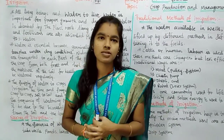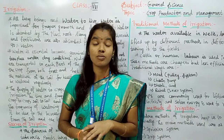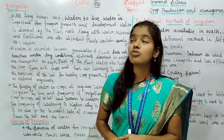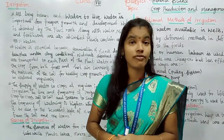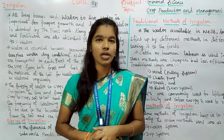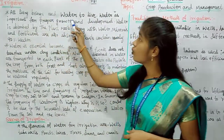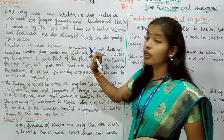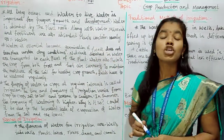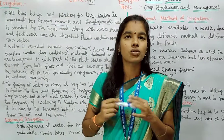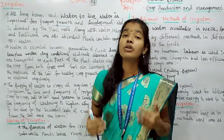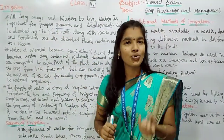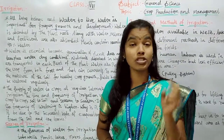Irrigation means the supply of water to crops at regular intervals. Today we are going to discuss irrigation, sources of irrigation, and methods of irrigation. First, all living beings need water to live. Water is important for the proper growth and development of all living beings on earth.